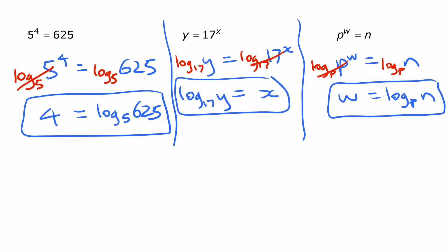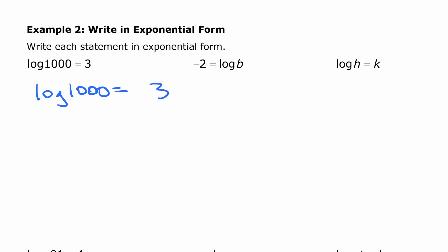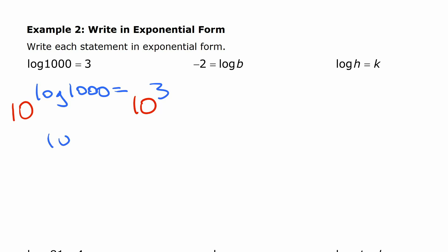Now let's go the other way and change these into exponential form. The first one: log of a thousand is three. If we have this logarithmic expression, we undo it by doing the inverse — the anti-log of both sides. That means taking ten and raising it to the power of what's on both sides, making each side become the exponent on a ten. The anti-log of log of a thousand cancels out, leaving a thousand equals ten to the third. That's exponential form.